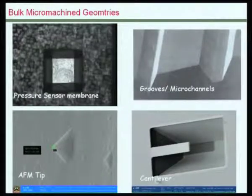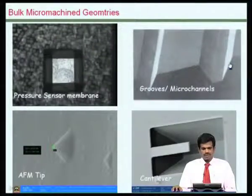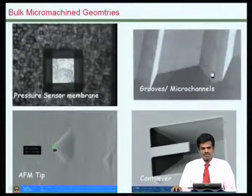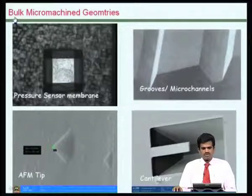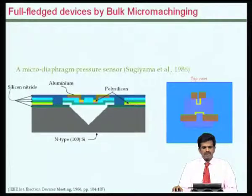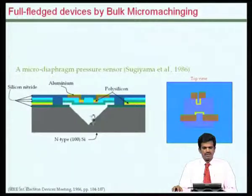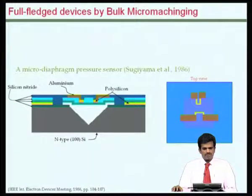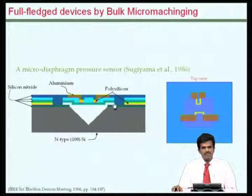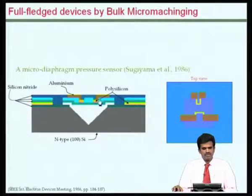Bulk micromachining, also discussed previously, can be used for various devices. One can build cavities, tip-like structures, cantilevers, or grooves using the bulk micromachining process. Now let us look at a full-fledged pressure sensor using this approach. You see there is a diaphragm kind of geometry with a cavity below it. To build this, we need to build all these thin films and also create this cavity. Such a cavity can be built by bulk micromachining, and all the layers can be added by a series of deposition and patterning steps.